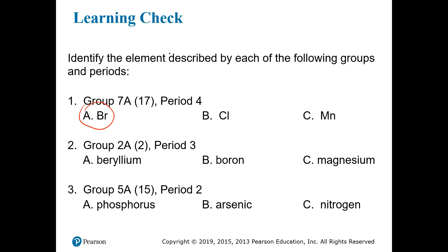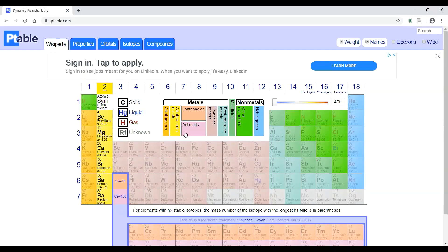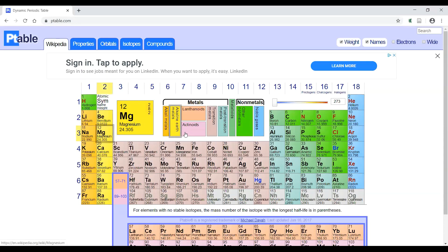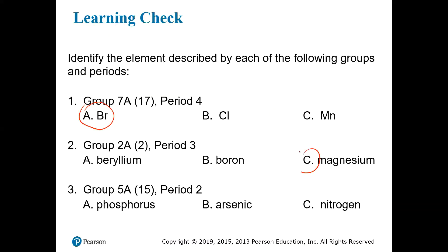Group 2A period 3, let's look. Group 2A again is the representative elements. Period 3 is this period. And so we're looking at magnesium.